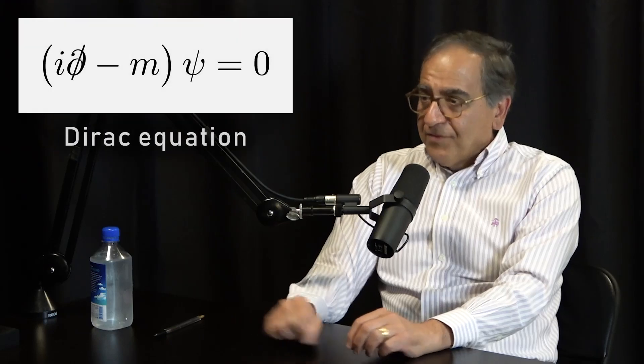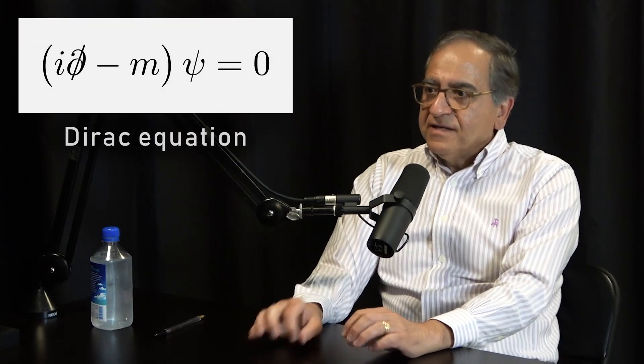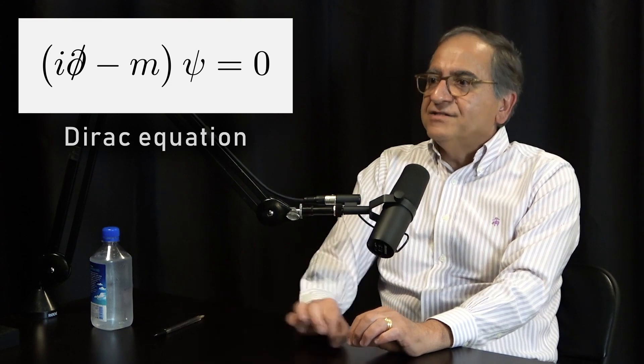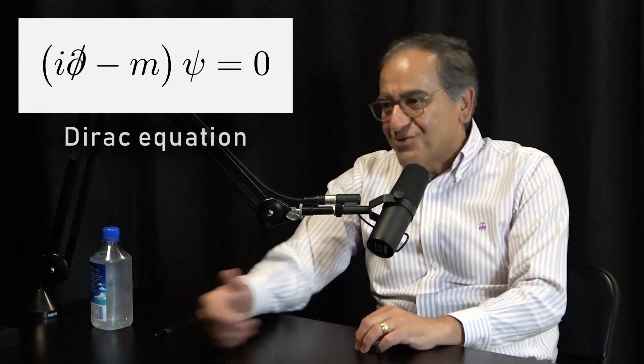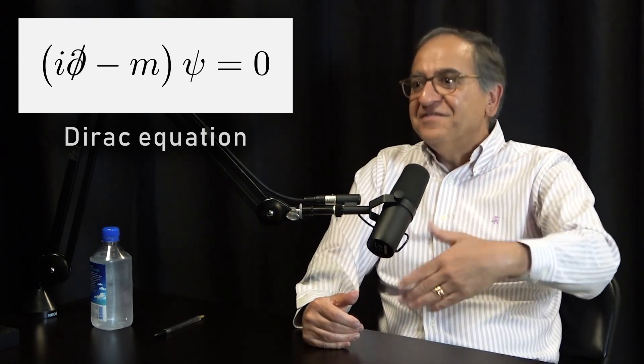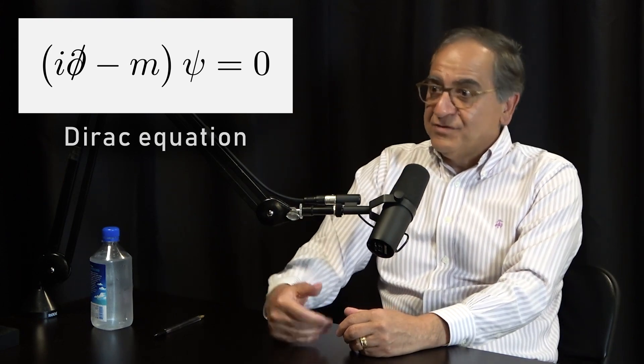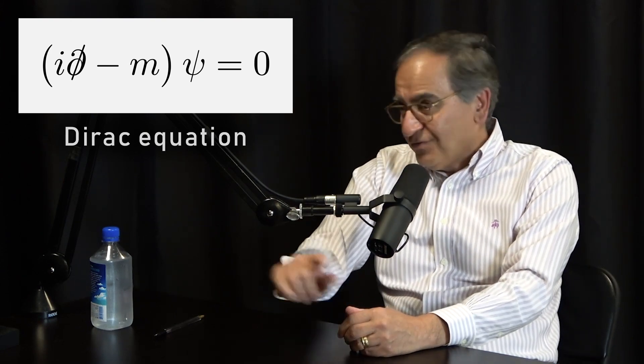At those speeds you need relativity. So Dirac tried to combine Einstein's relativity with quantum mechanics. He wrote this beautiful equation, the Dirac equation, which roughly speaking takes the square root of Einstein's equation in order to connect it to Schrödinger's time evolution operator — which is first order in time derivative — to get rid of the second-order term Einstein's equation would have given. So you have to take a square root.